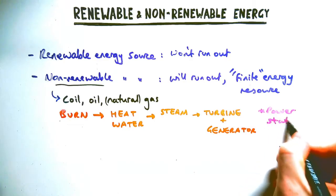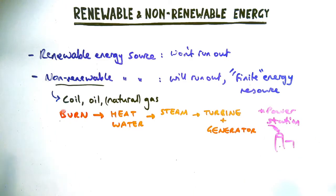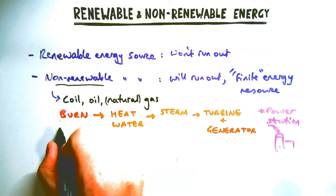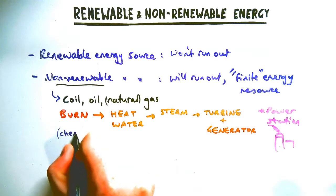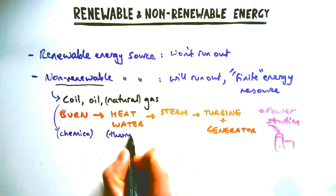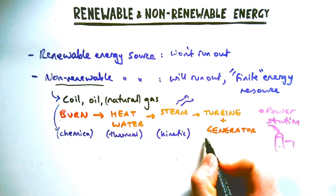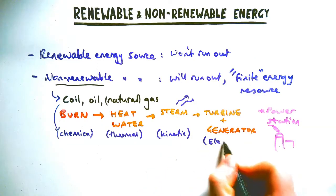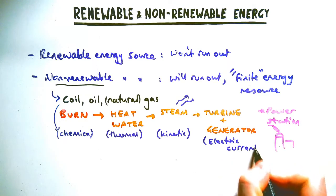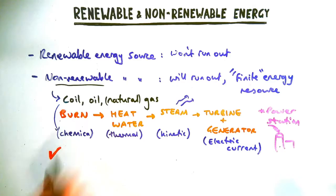Questions could ask you — this is inside a power station — about the different energy stores and energy transfers. All fuel has chemical energy in it. When it's heated, it has thermal energy and is used to turn into steam, which is kinetic energy, and provides electrical current that's transferred to the national grid.